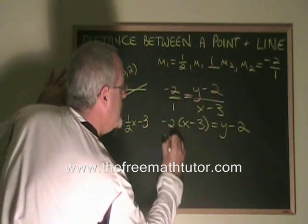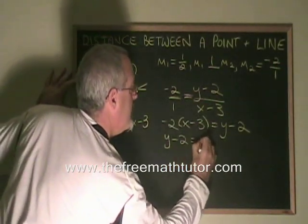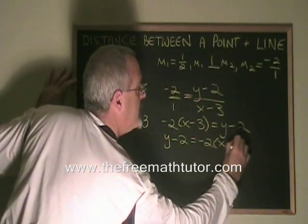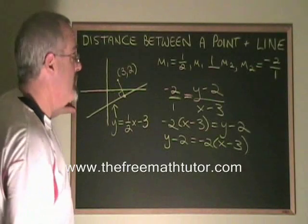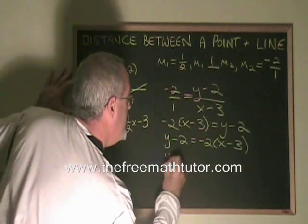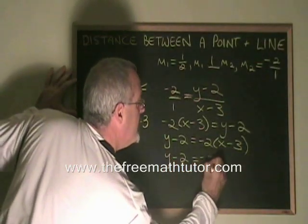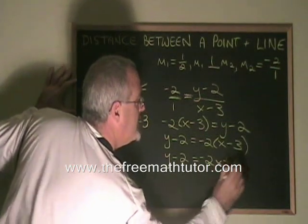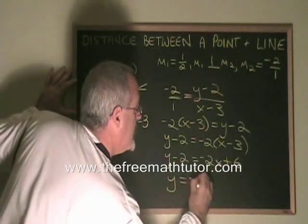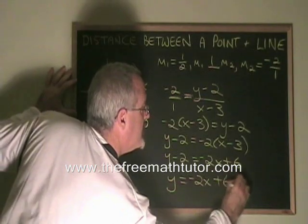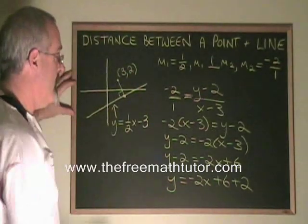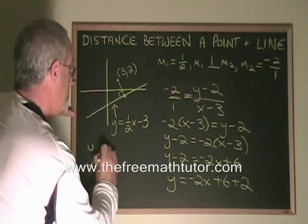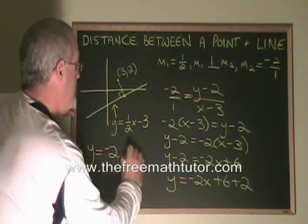I'm going to write this backwards. y minus 2 equals negative 2 times x minus 3. I am proceeding to isolate my y on the left side of the equal sign. y minus 2 equals negative 2x plus 6. So the equation of this second perpendicular line has to be y equals negative 2x plus 8.